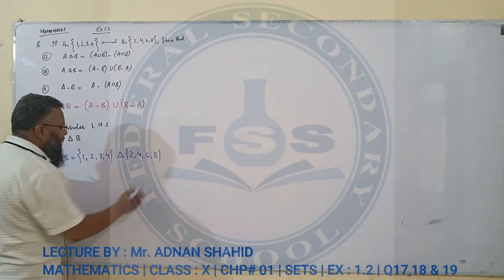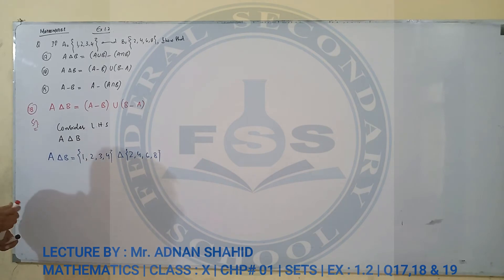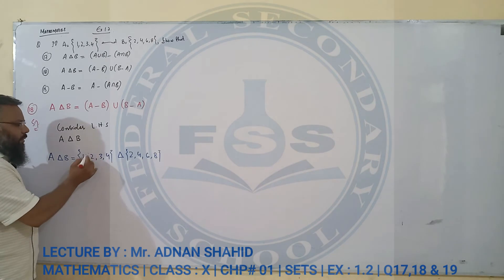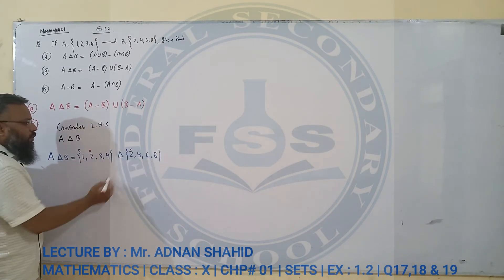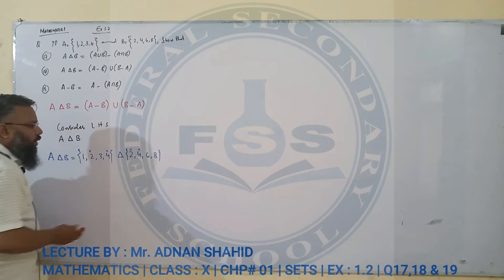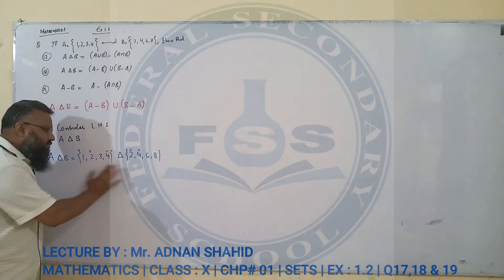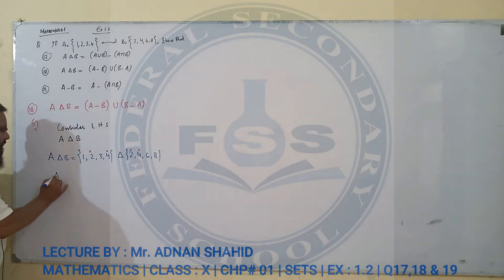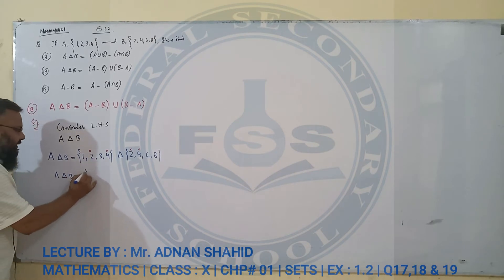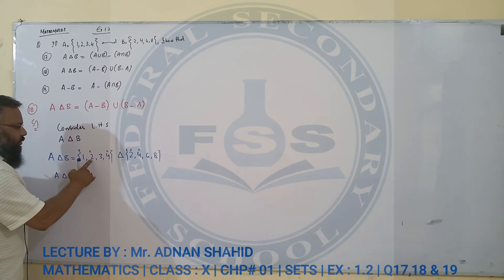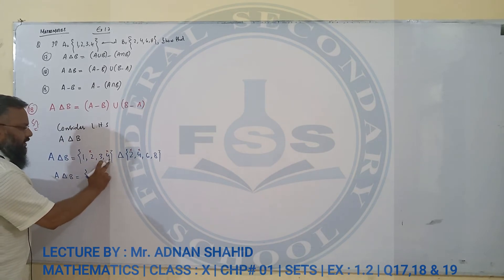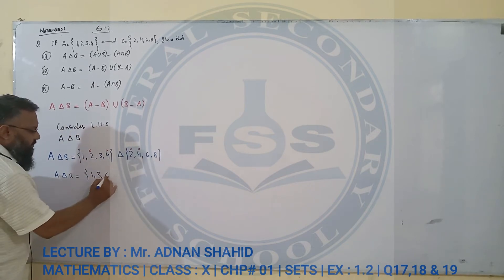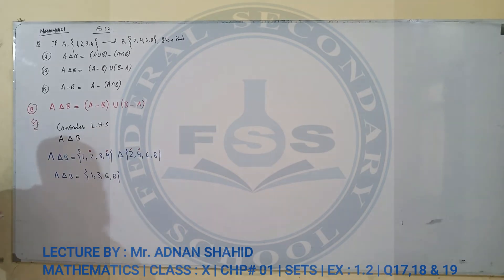Set B elements: 2, 4, 6, 8. Symmetric difference apply करते हैं — दोनों sets के common elements को cross करते हैं। जो common हैं वो cross हो जाते हैं। जो elements बचते हैं वो symmetric difference होते हैं। तो LHS: A symmetric difference B = {1, 3, 6, 8}।